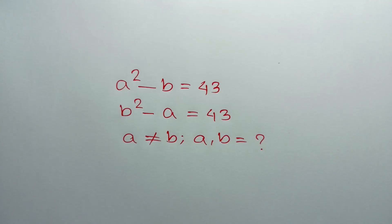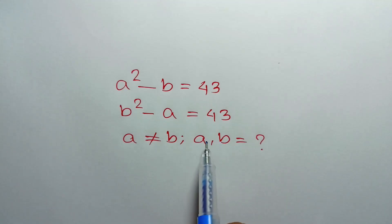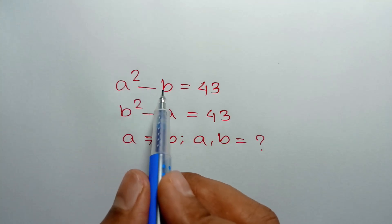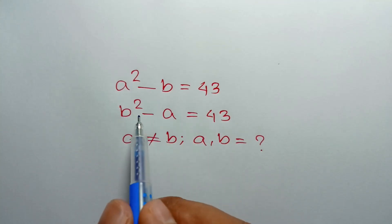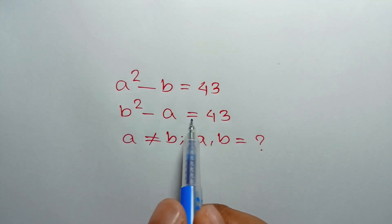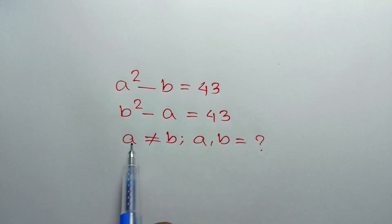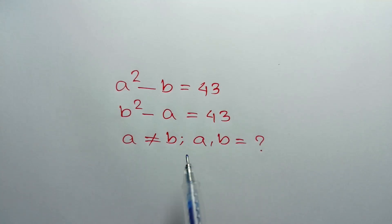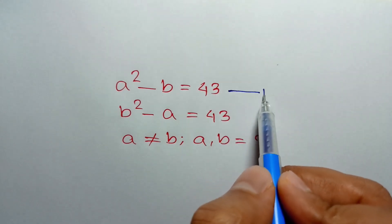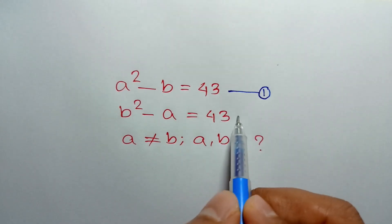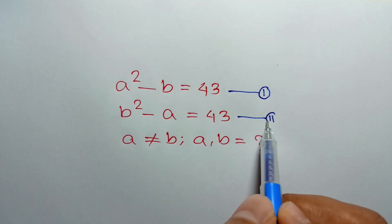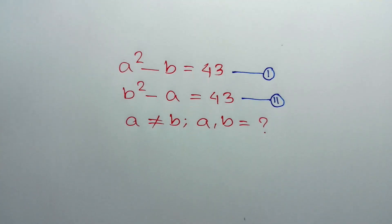Hi everyone. In this video I am going to show how to find the value of A and B where A squared minus B is equal to 43 — call it equation number 1 — and B squared minus A is equal to 43 — call it equation number 2 — with A not equal to B.